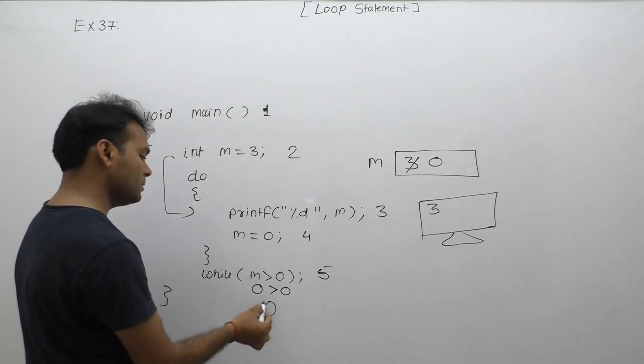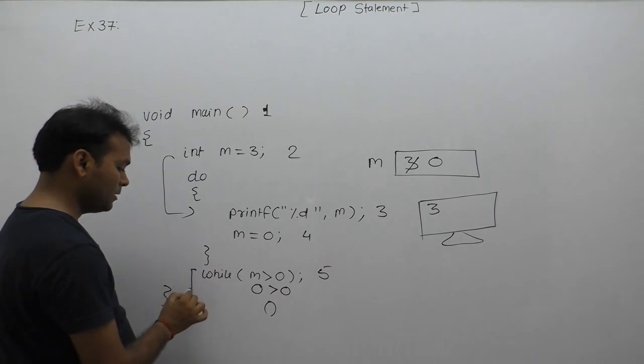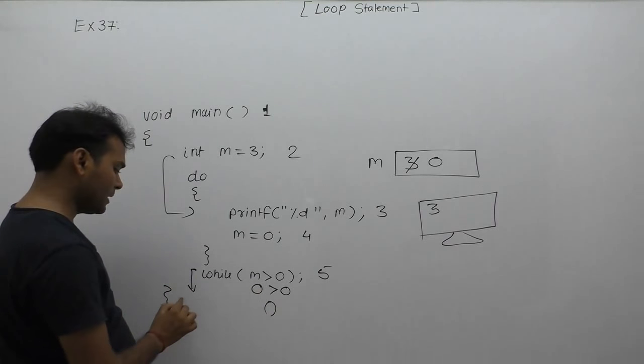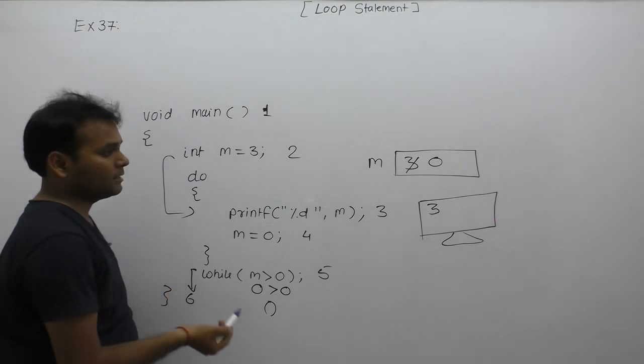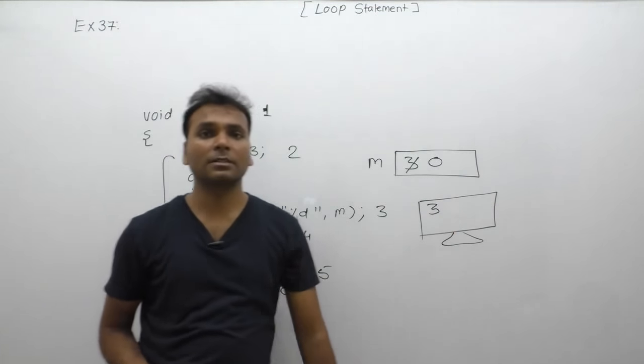False means control exits the loop body and goes to the next statement. There is nothing more in the program. Program is completed. Final output is 3.